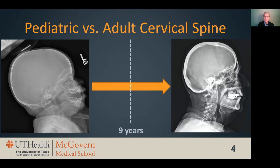The transformation from neonate to adult spine morphology is a gradual process occurring throughout childhood. However, much of the mineralization and morphologic transformation occurs by approximately nine years of age. So nine years becomes an important demarcation of injury, with patients after nine years of age having more adult-like injury patterns. However, even in these older children, significant ligament and bone maturation is still occurring, and their injury patterns are only similar, not identical to adults.